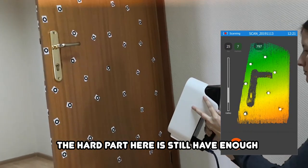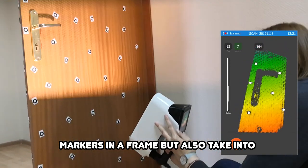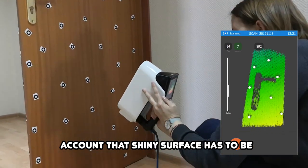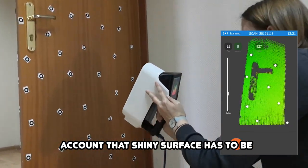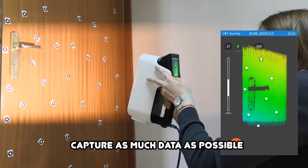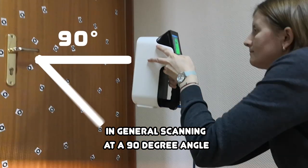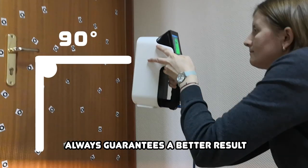The hard part here is to still have enough markers in a frame, but also take into account that shiny surfaces have to be scanned at a 90 degree angle in order to capture as much data as possible. In general, scanning at a 90 degree angle always guarantees a better result.